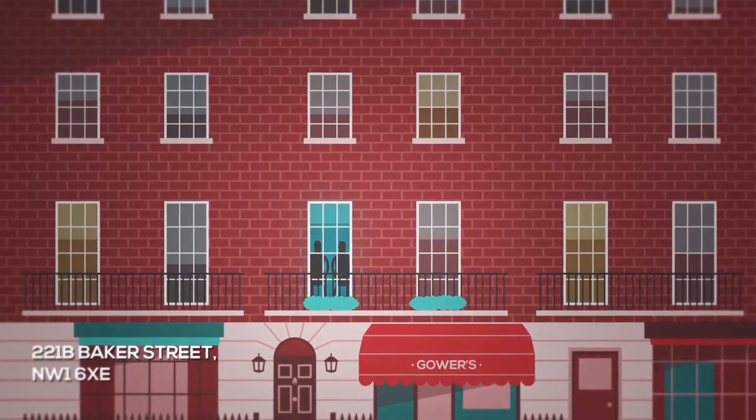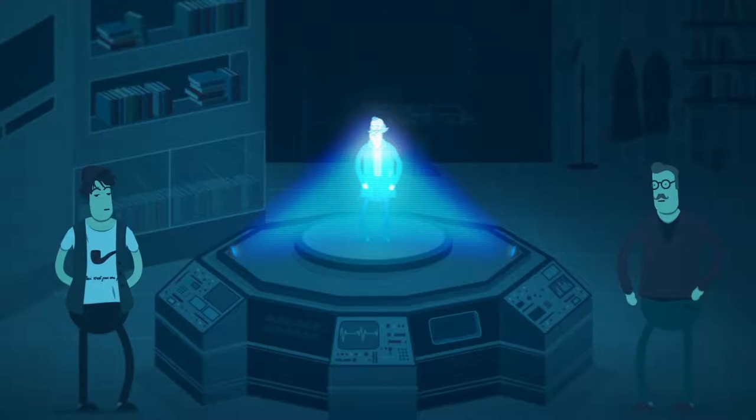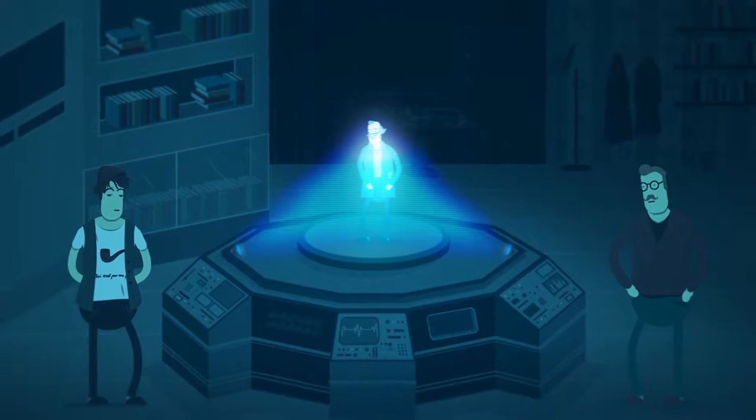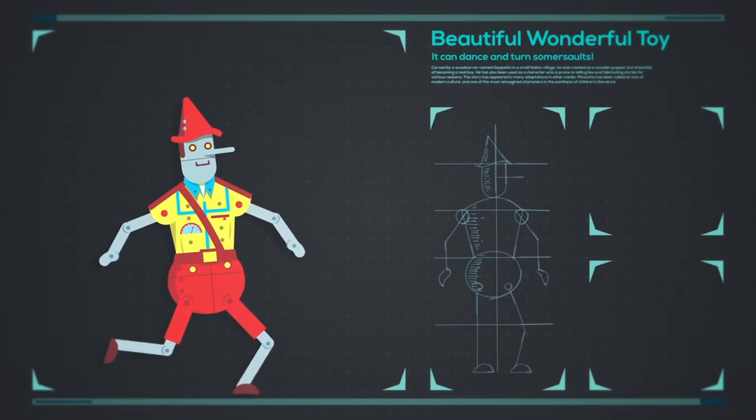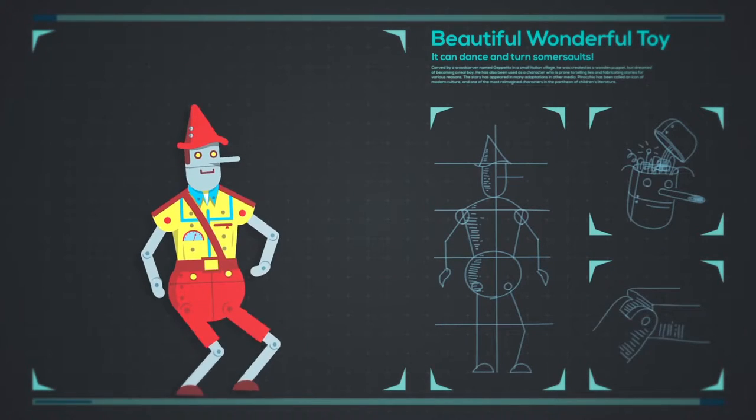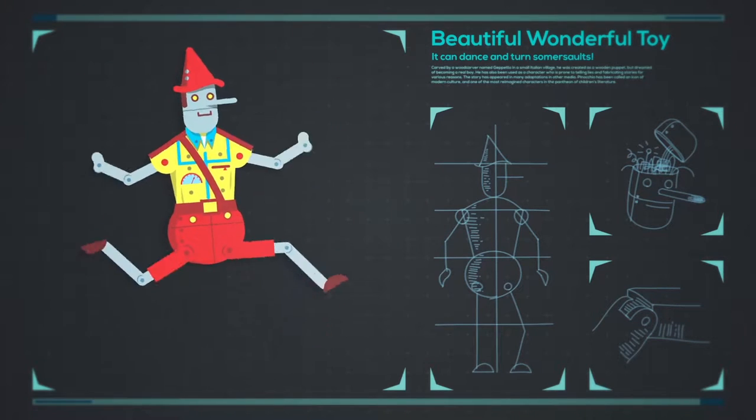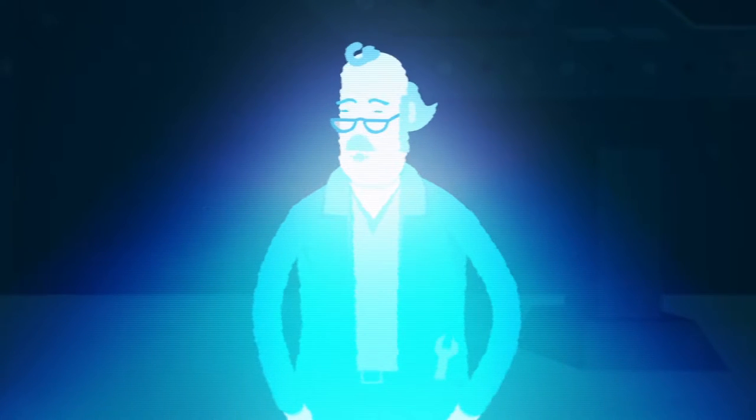You've got to help me, Mr. Holmes. My name is Joseph and something awful is happening. Some time ago I created a beautiful, wonderful toy. It can dance and turn somersaults. Kids love it, so I set up a little company and started selling it, you know, just to bring home the bacon.